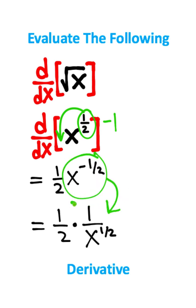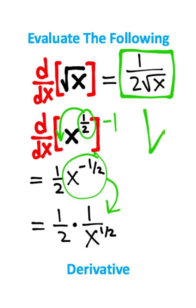For the final step, I'm going to multiply the two fractions, and I'm also going to change this one-half power back to a square root. So the derivative of the square root of x equals 1 over 2 times the square root of x. And this right here is the derivative of the square root of x.